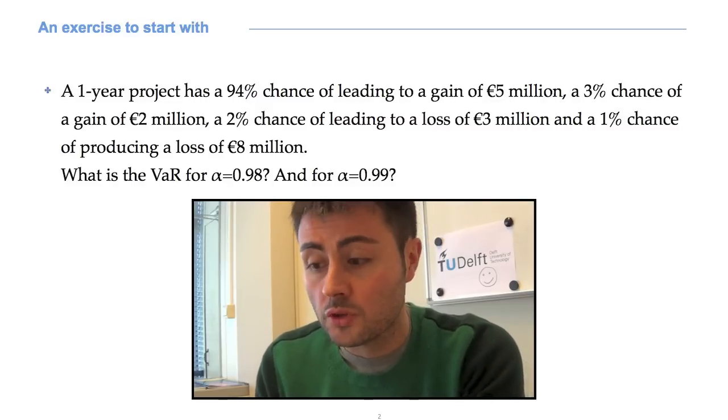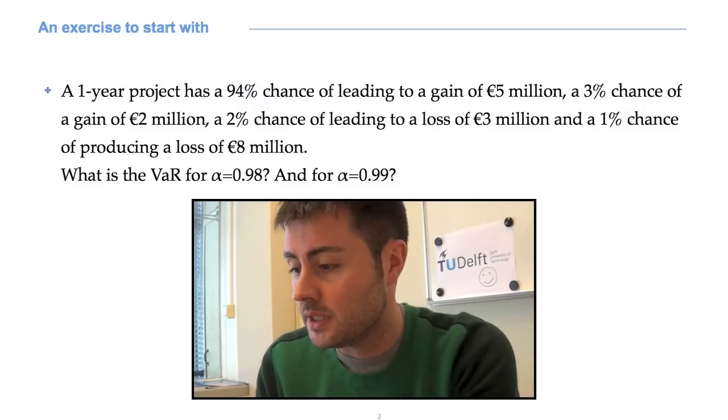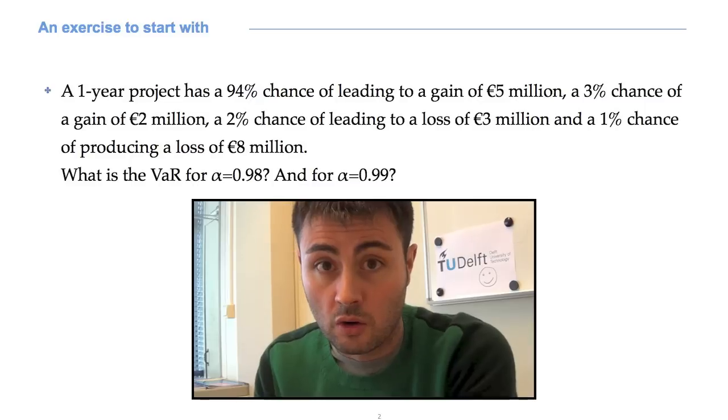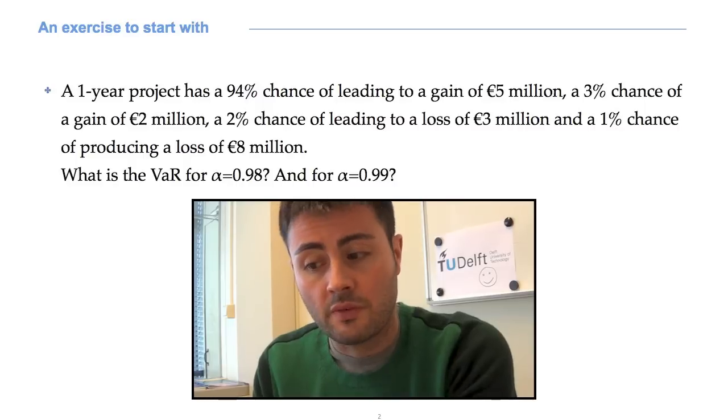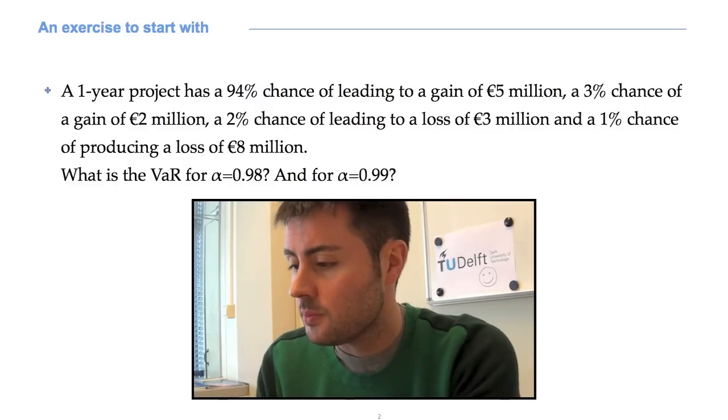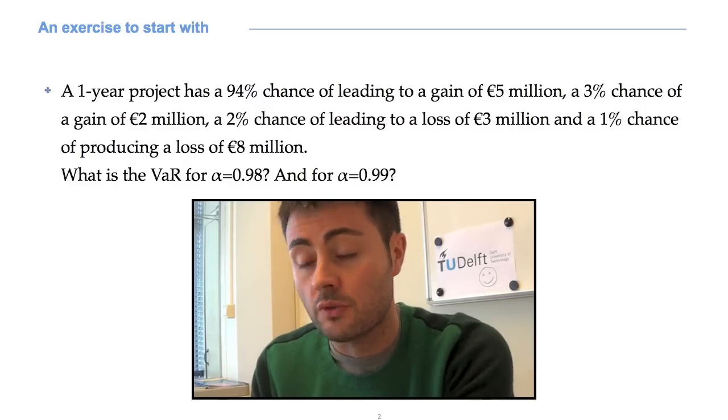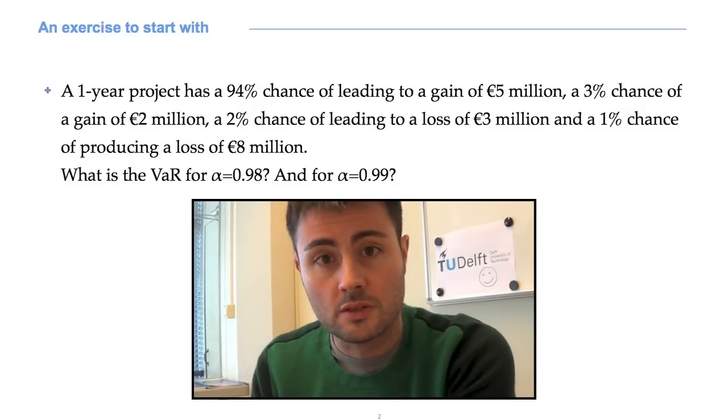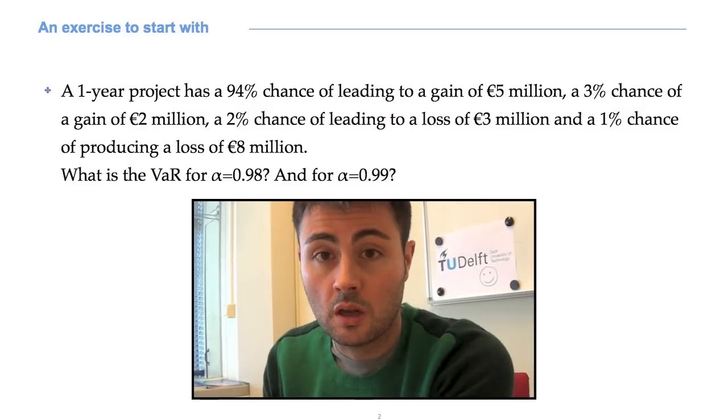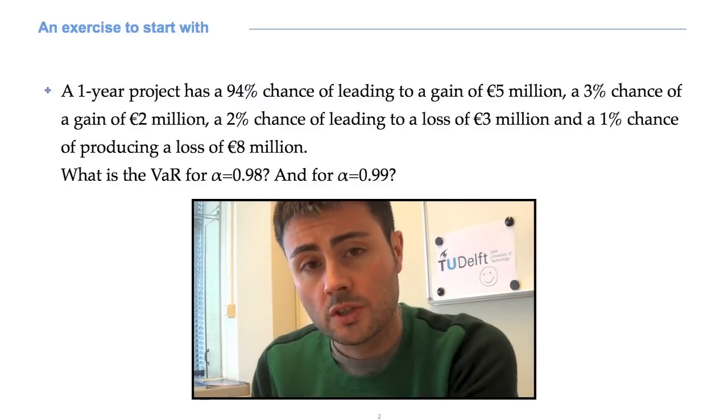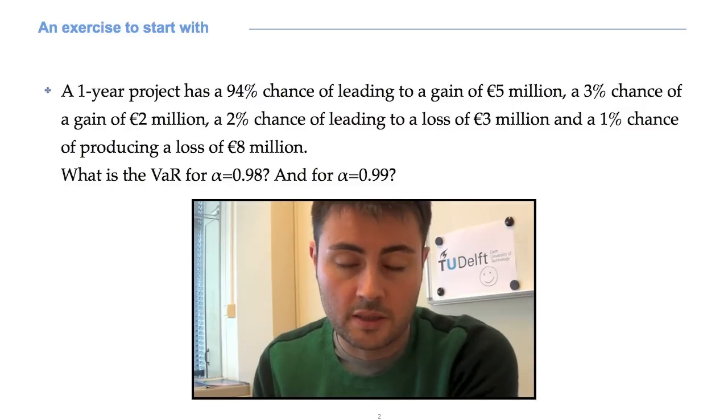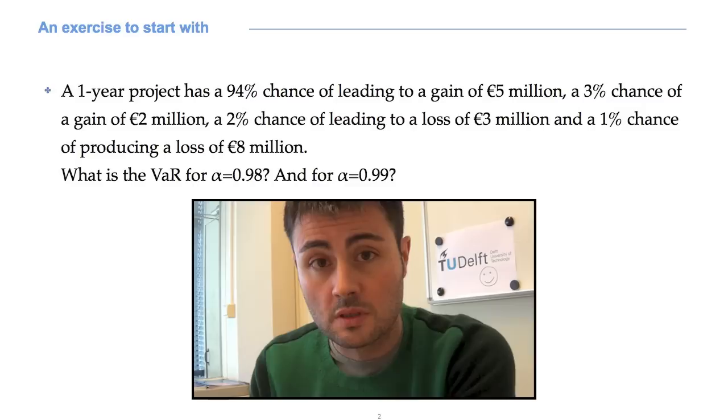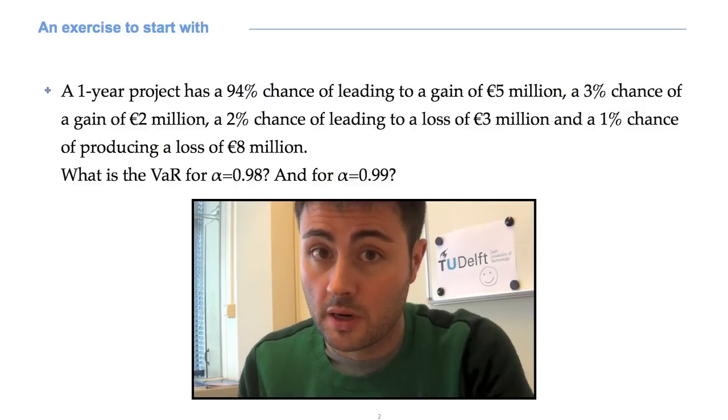A one-year project has a 94% probability of leading to a gain of 5 million, a 3% chance of a gain of 2 million euros, a 2% chance of leading to a loss of 3 million, and a 1% chance of producing a loss of 8 million. The question is, what is the VaR at alpha level 0.98, so the 98% VaR? What happens if alpha is 0.99?